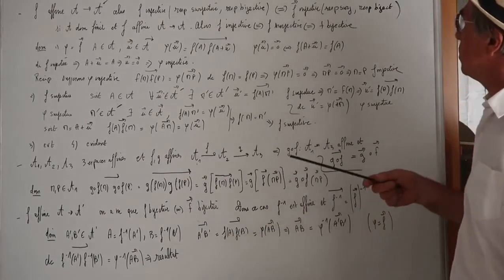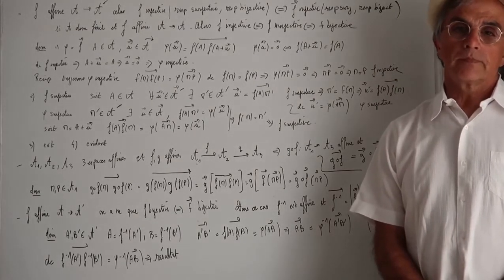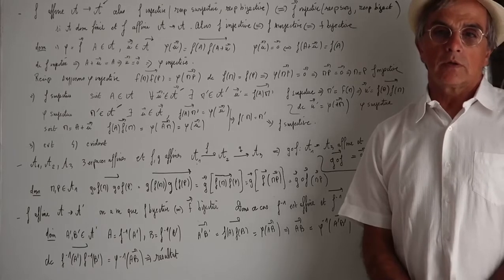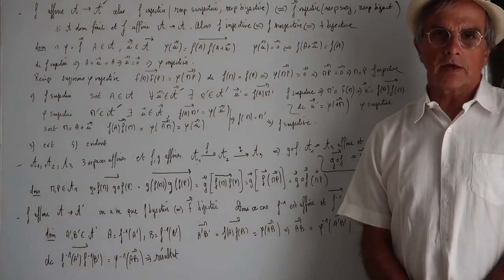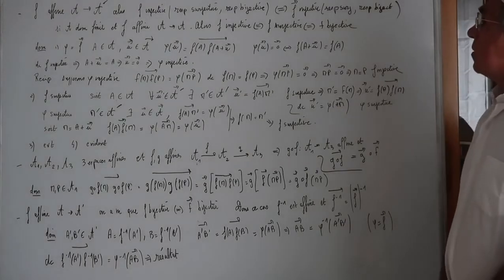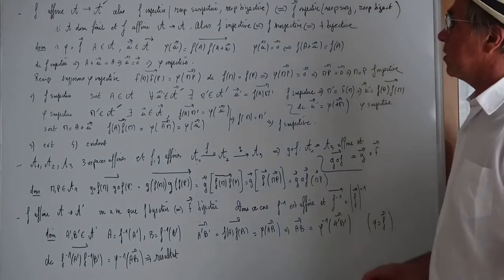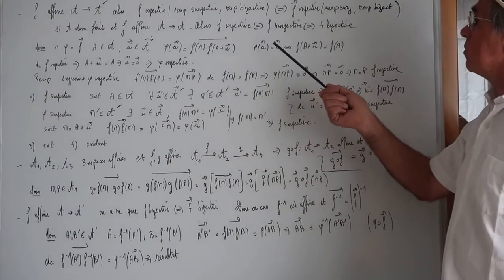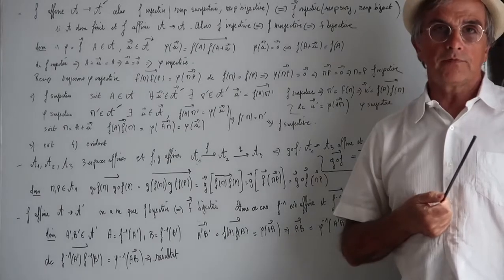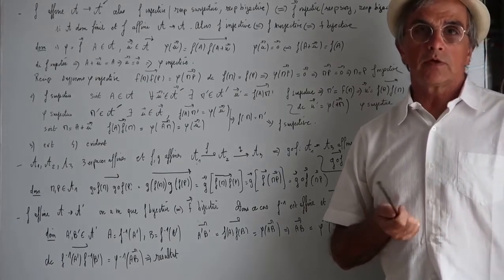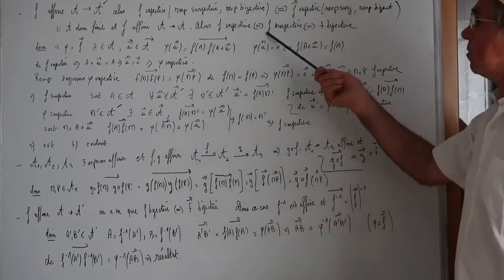Tout le reste est évident : dire que F est bijective équivaut à dire que F est injective et surjective, ce qui équivaut à dire que sa partie linéaire est injective et surjective, donc bijective. En dimension finie, on sait qu'une application linéaire est bijective si et seulement si elle est injective, si et seulement si elle est surjective. Donc on a le résultat.